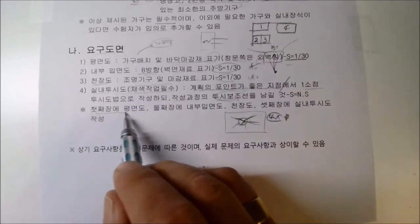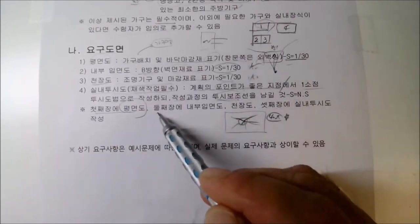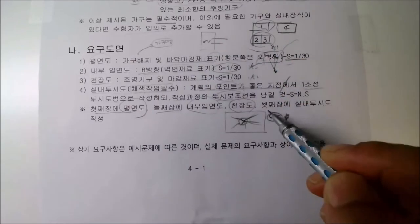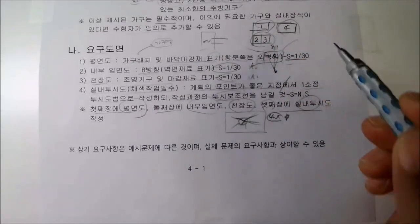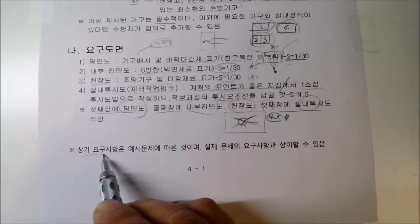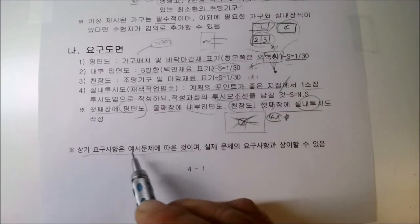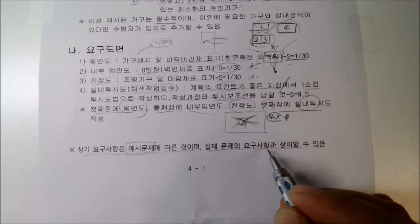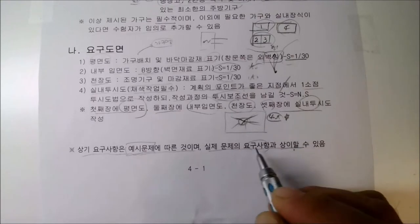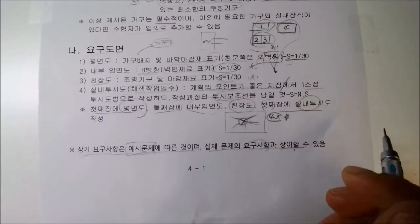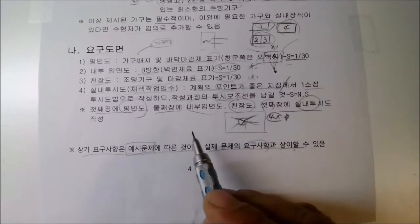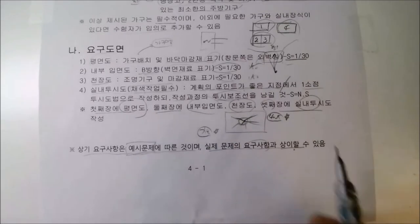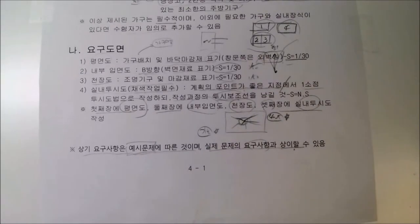정리하면, 첫째 장은 평면도, 둘째 장은 내부 입면도와 천정도, 셋째 장은 실내 투시도를 작성합니다. 이 요구사항은 예시 문제이므로 실제 시험과 다소 다를 수 있으나, 기본적인 내용만 확실히 알면 누구라도 충분히 해낼 수 있습니다.